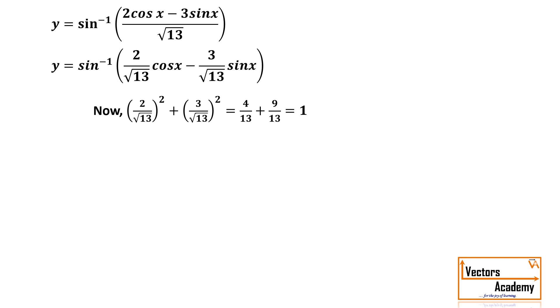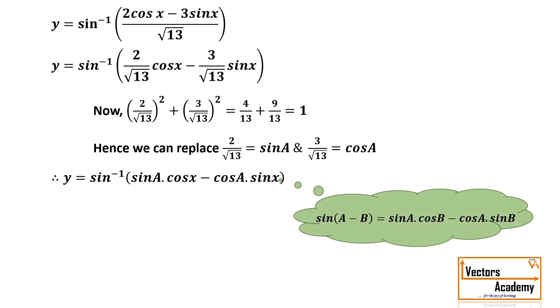As we know sin square theta plus cos square theta is equal to 1. Hence we can substitute one of these values as sin a and the other as cos a. Now substituting them in our equation I'll get y is equal to sin inverse of 2 by root 13 is taken as sin a. Hence it becomes sin a cos x and 3 by root 13 is cos a. The second term becomes cos a sin x.